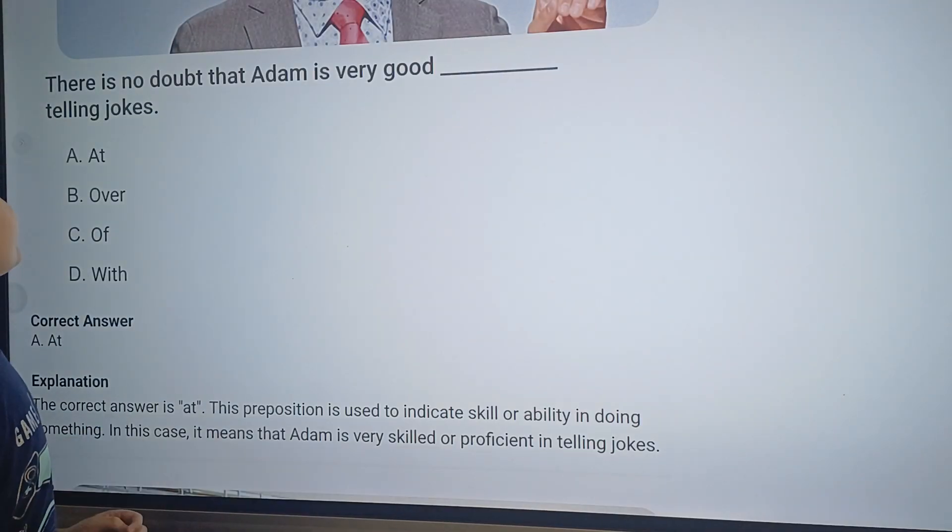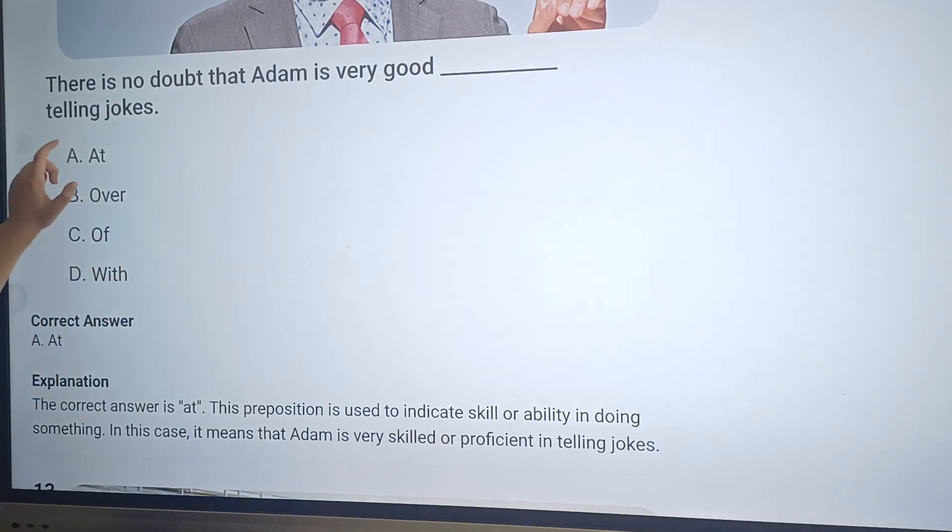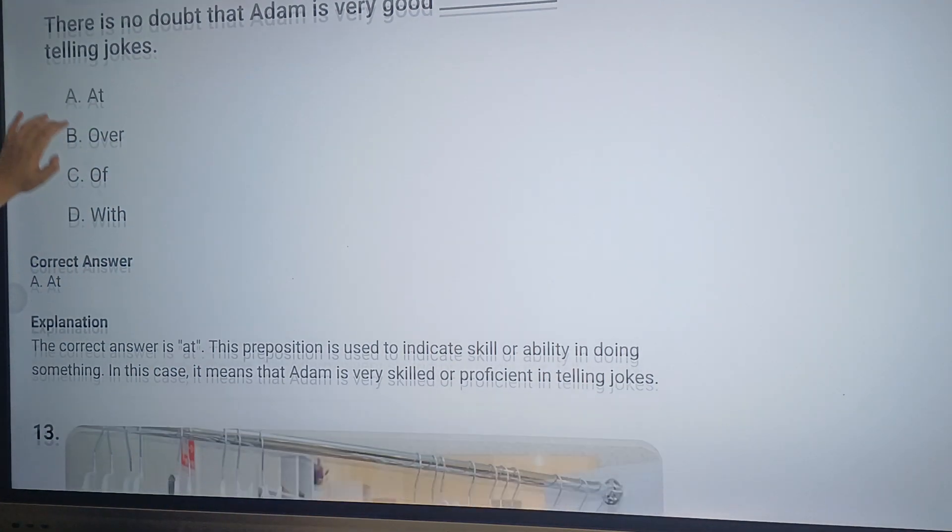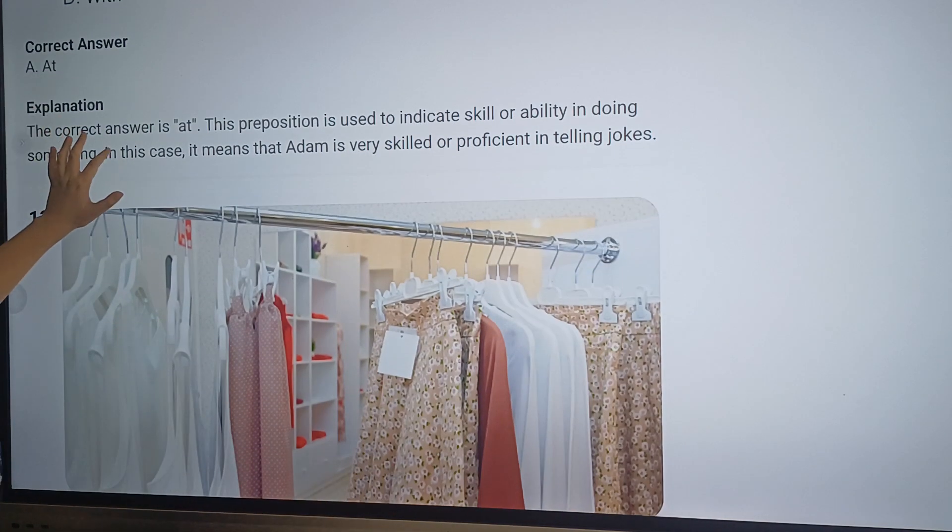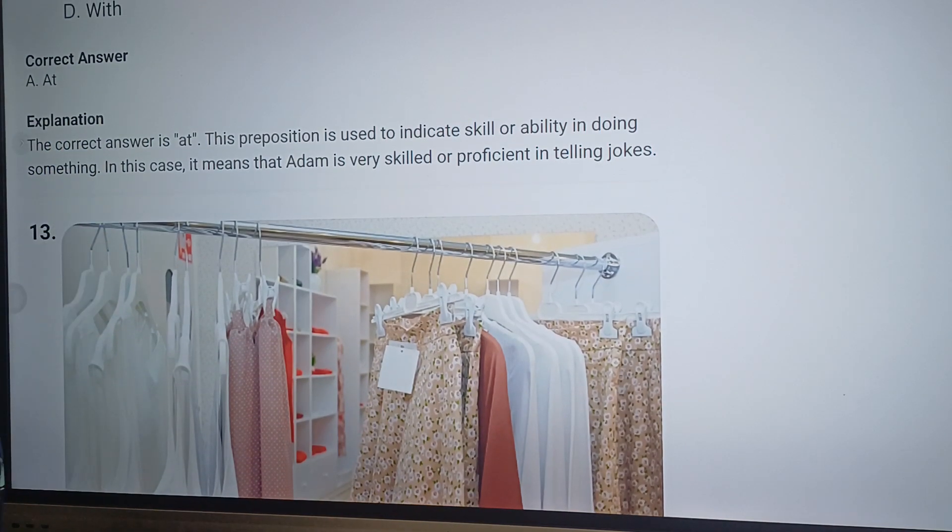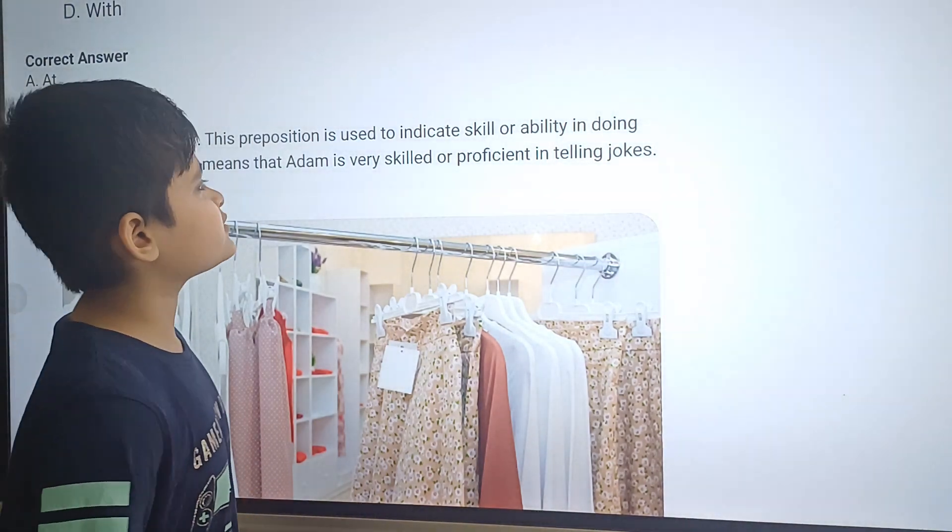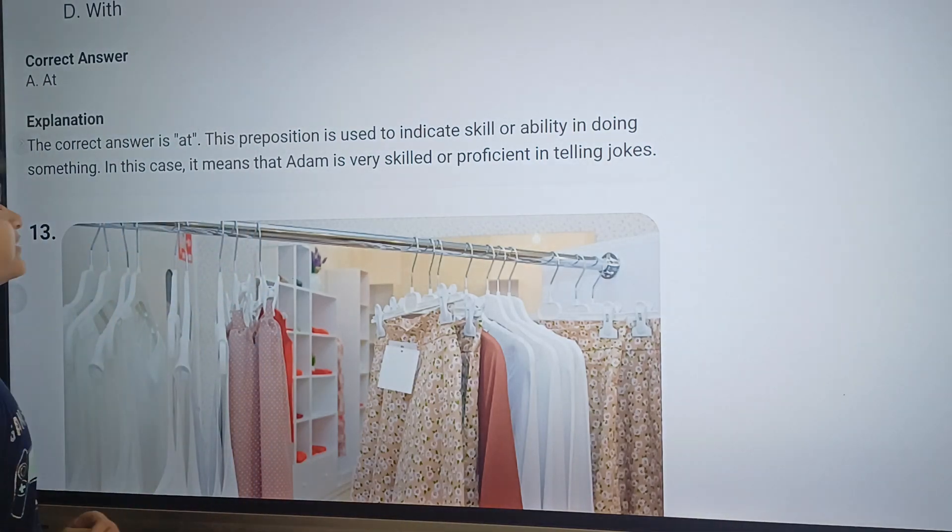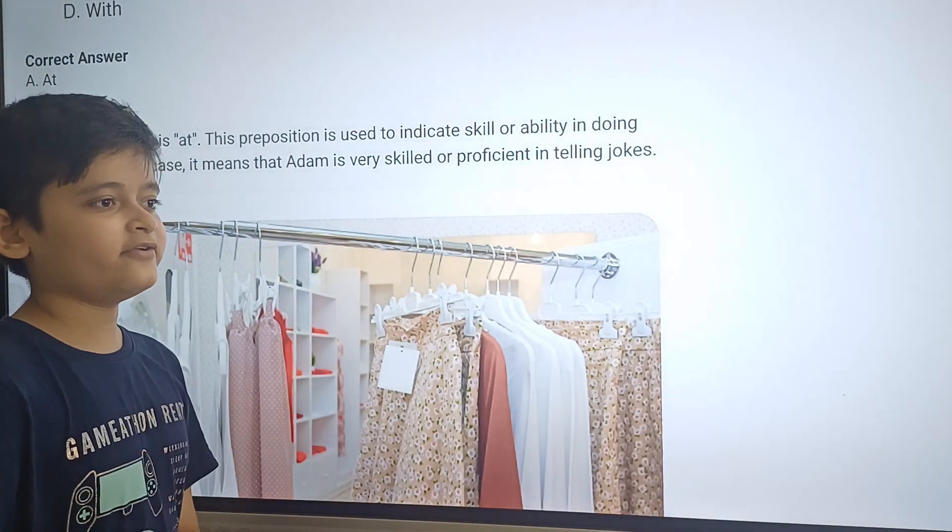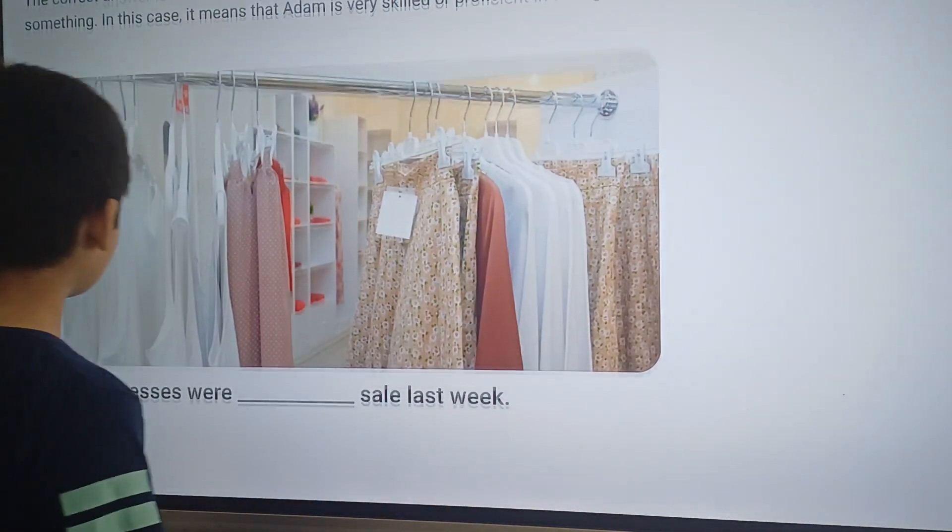Okay, question twelve. There is no doubt that Adam is very good dash telling jokes. The answer will be option A, at. As you can see here, I was correct. Here is the explanation why it is so: The correct answer is at. This preposition is used to indicate skill or ability in doing something. In this case, it means that Adam is very good at telling jokes, or very skilled or proficient.